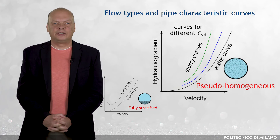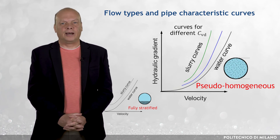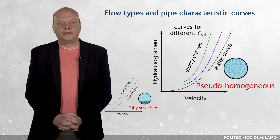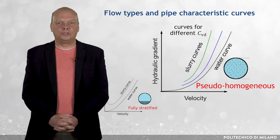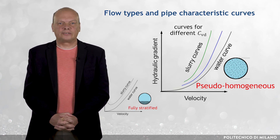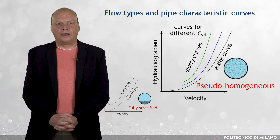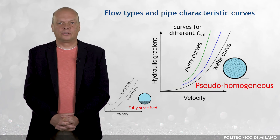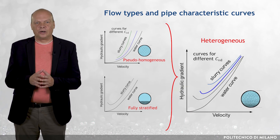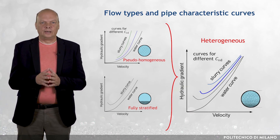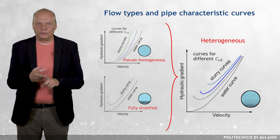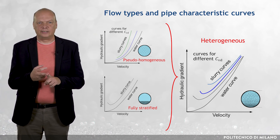The other limiting case is represented by the behavior found for fine-scent slurries and known as pseudo-homogeneous flow, for which the particles are carried by the fluid rather than by intergranule contacts. The intermediate case is known as heterogeneous flow, for which both intergranule contact and fluid support mechanisms are significant.